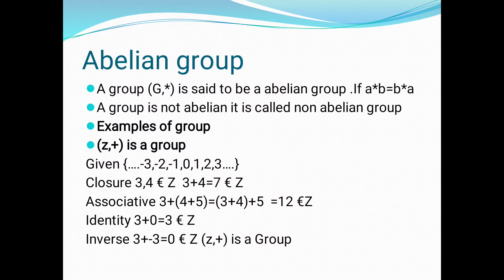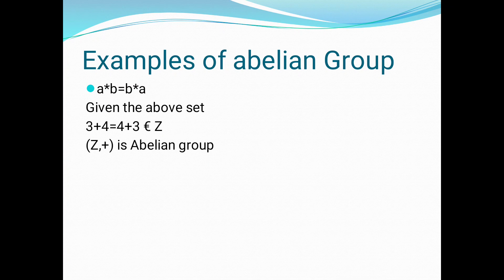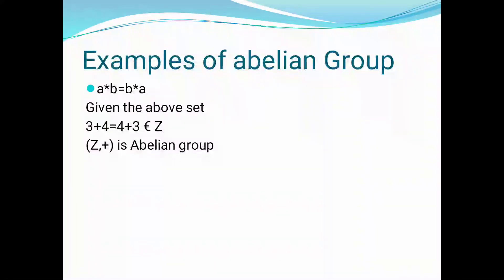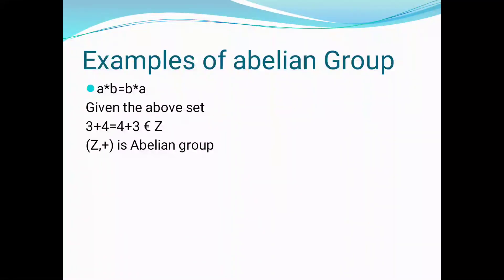Next, the example of an abelian group. A star B = B star A. Using the values three and four with binary operation plus: A + B = B + A, that is 3 + 4 = 4 + 3 = 7. Seven is also contained in the same set. So (Z, +) is an abelian group.